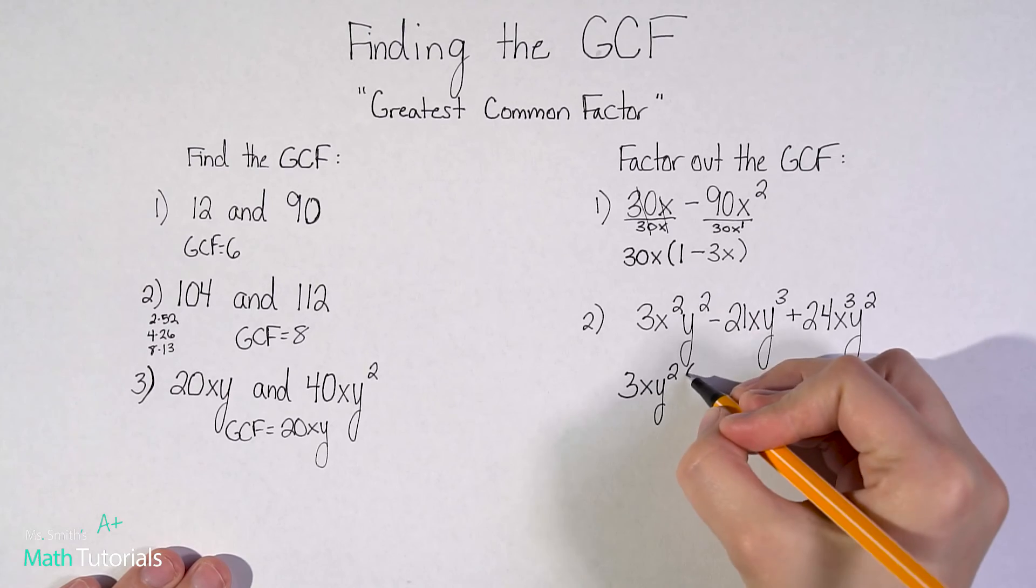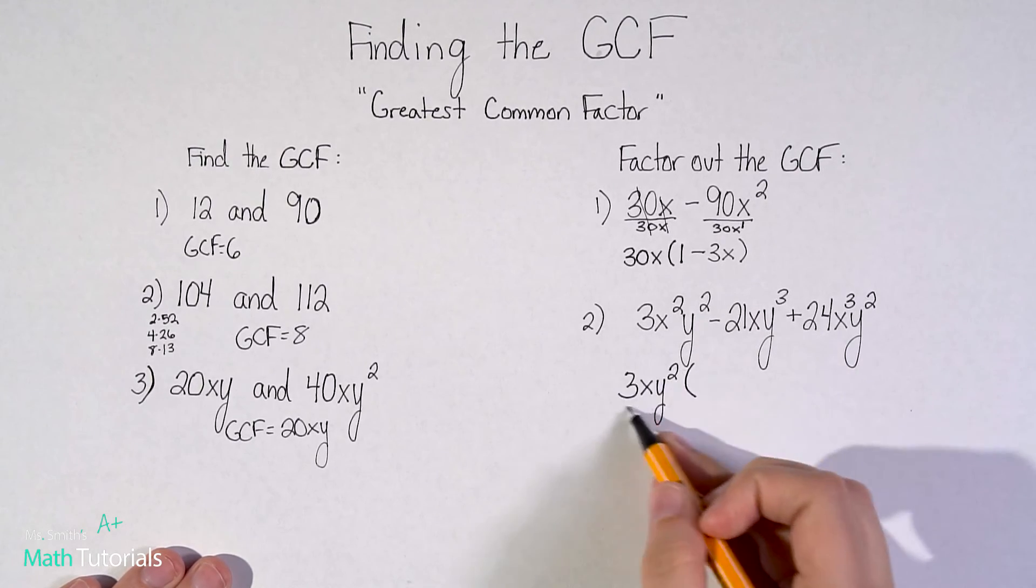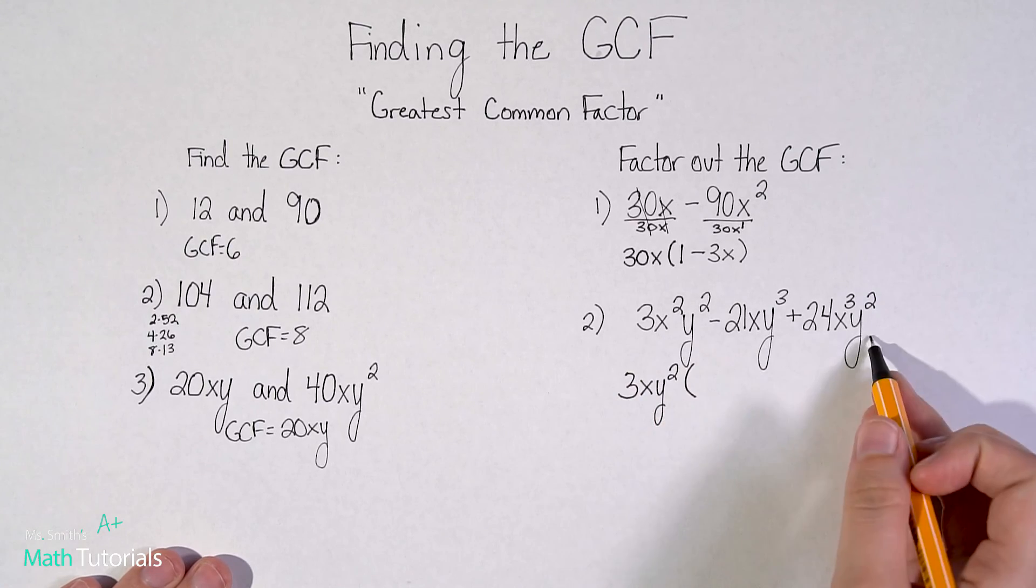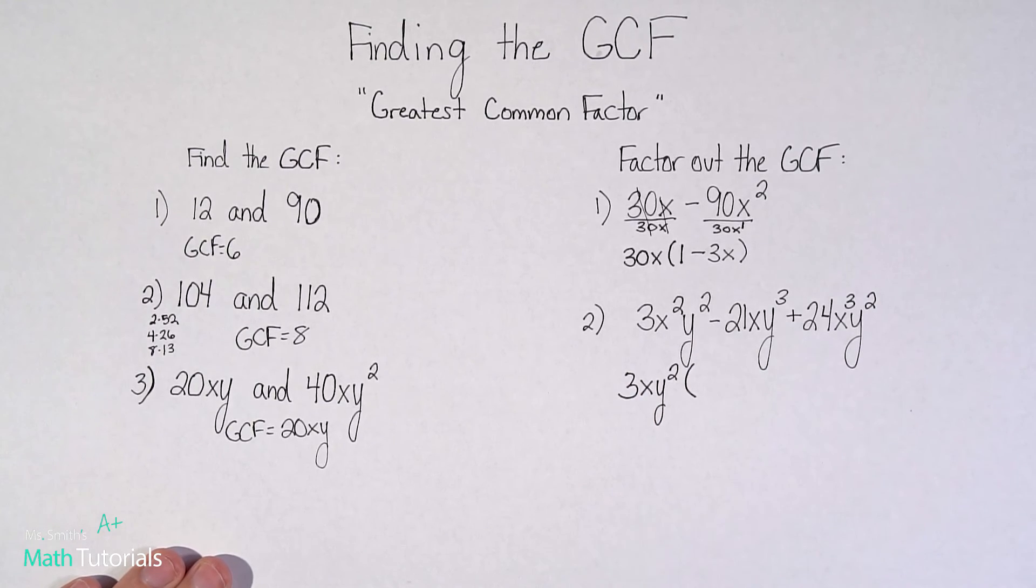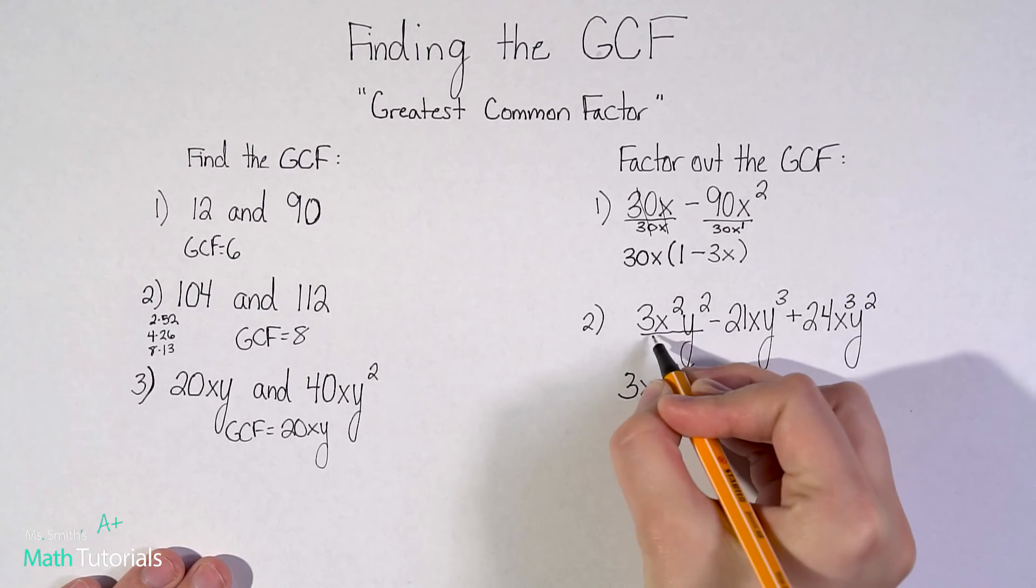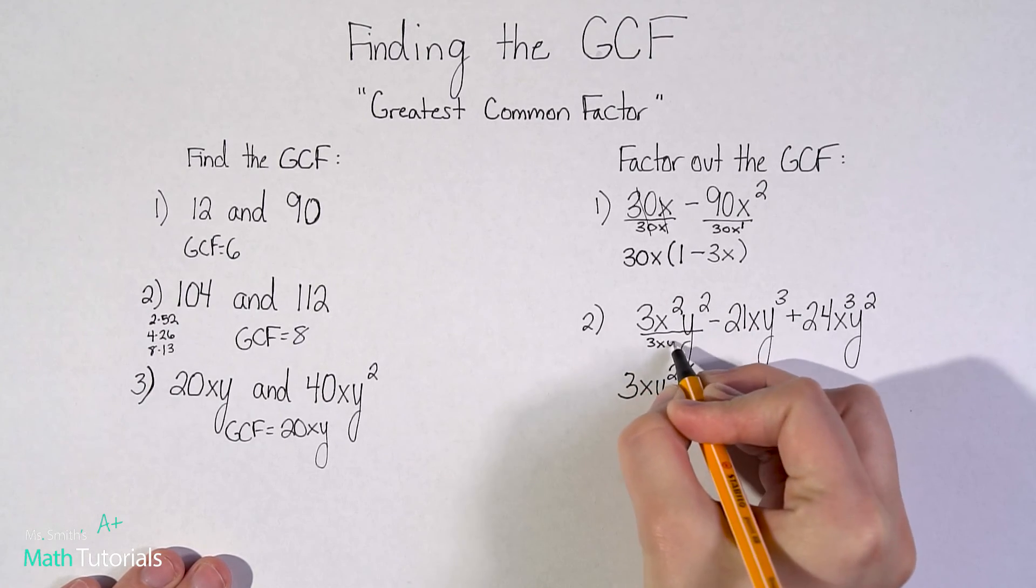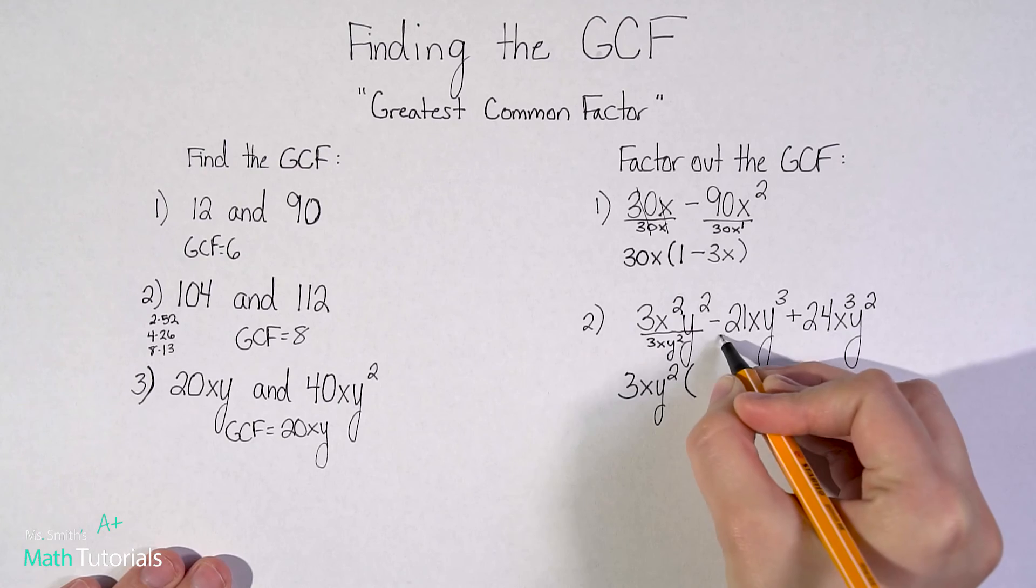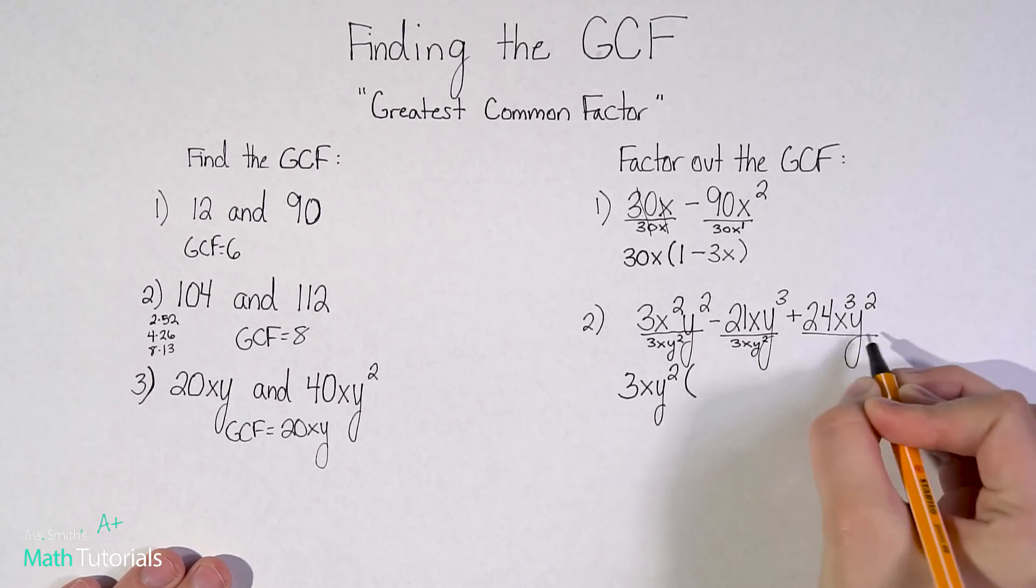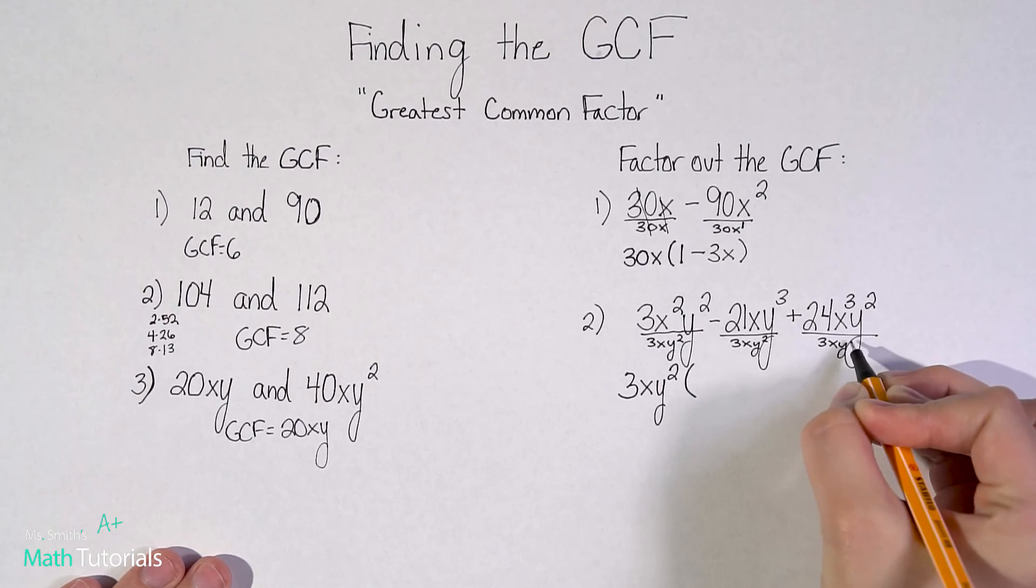All right. So now let's build in what we have now that we figured out the GCF. Let's actually factor it out and list what we have left. So literally what we're doing is dividing out this three x y squared, three x y squared, three x y squared.